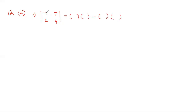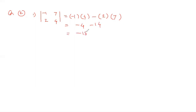So, first minus 1 multiply by 4, then minus 2 multiply by 7. Minus 1 times 4 becomes minus 4, and 2 times 7 is 14. Minus 4 minus 14 equals minus 18. That is our answer.